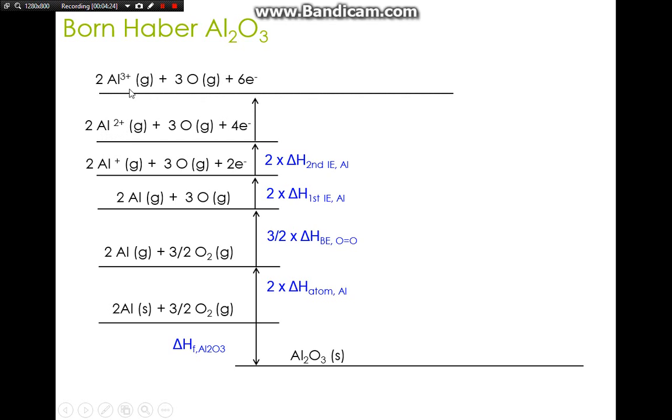Aluminum²⁺ will go to aluminum³⁺. We need to remove electrons again, so removing one more electron from each atom, you become two moles of Al³⁺. We have a total of six electrons removed. This is the third ionization energy of aluminum.